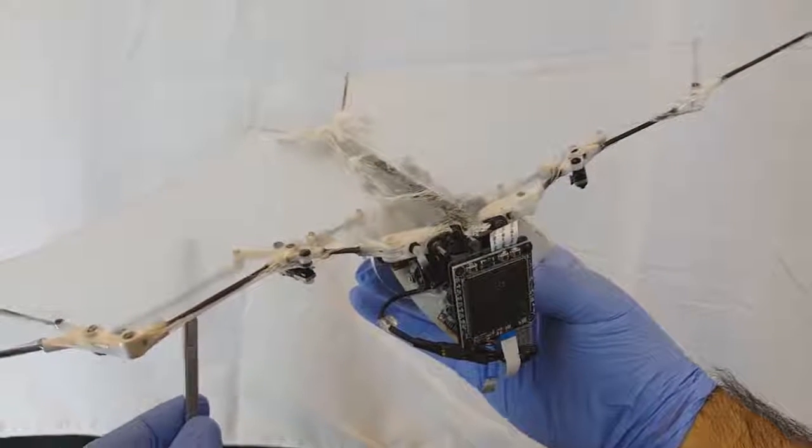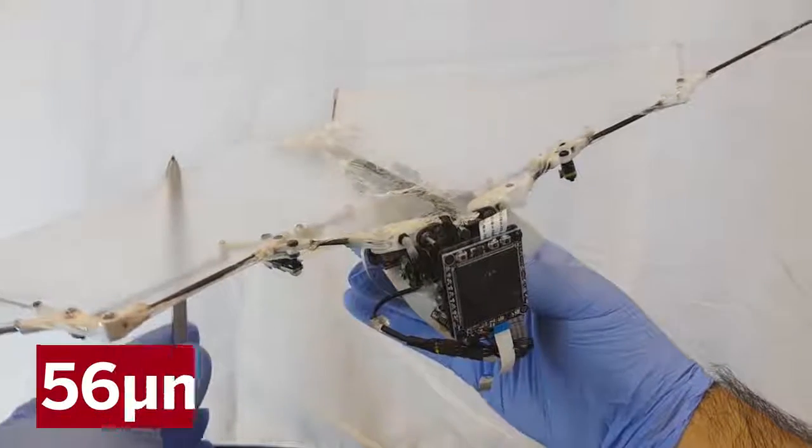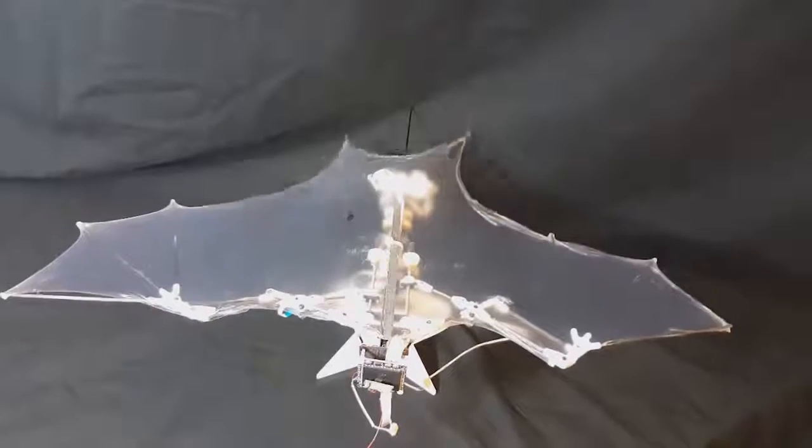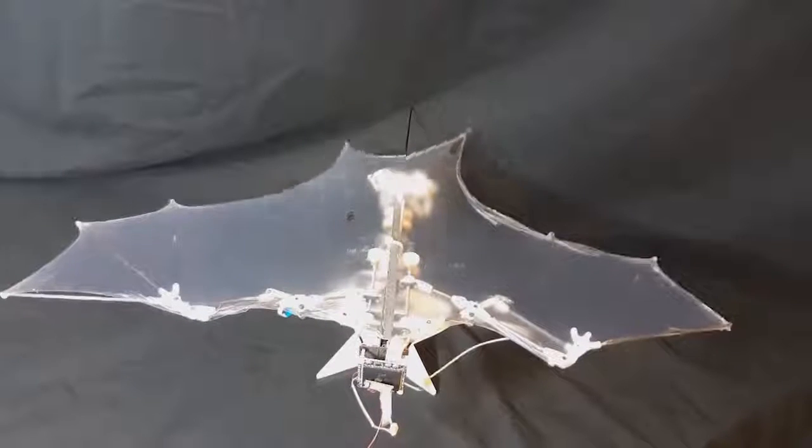BatBot is a fully autonomous flying robot, weighing in at 93 grams, and its articulated wings are covered in an ultra-thin 56 micron membrane. It also moves its legs in order to shape the wing surface.